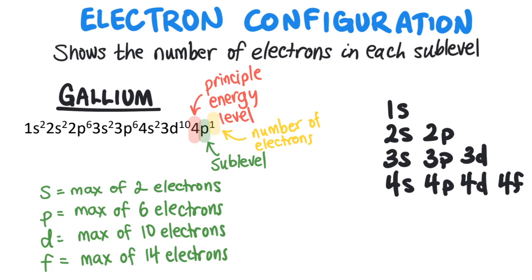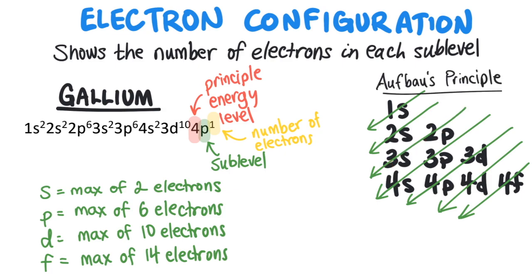Now we have to fill the sublevels in the correct order. There's an interesting tool to remember the proper order. Draw arrows at 45 degrees through our grid that we made and then we just follow the arrows and that will give us the correct order to fill the sublevels. This is referred to as Aufbau principle.